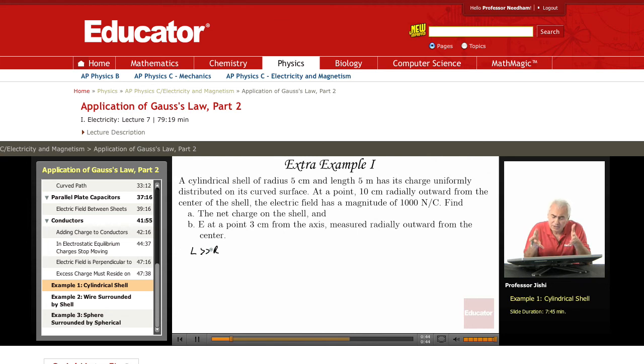So it has its charge uniformly distributed on its curved surface at a point 10 centimeters radially outward from the center of the shell. So here's a shell. And the radius is 5 centimeters. So here's the center of the shell, 5 centimeters, and then you go 10 centimeters here.